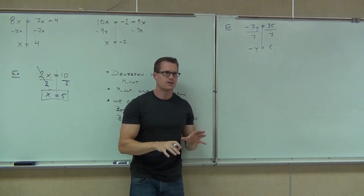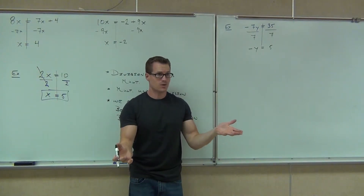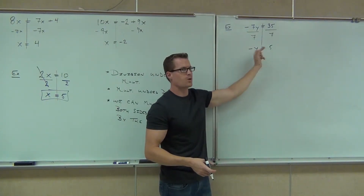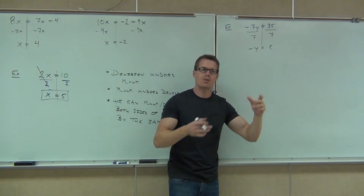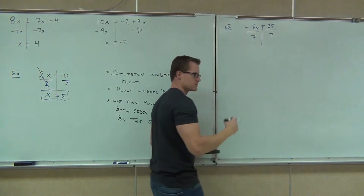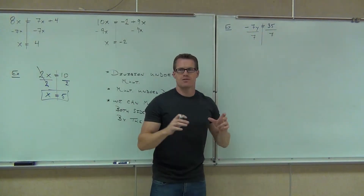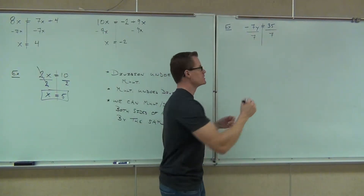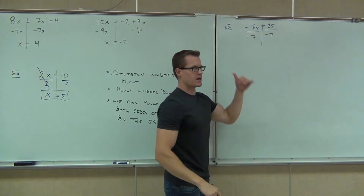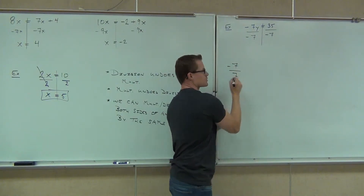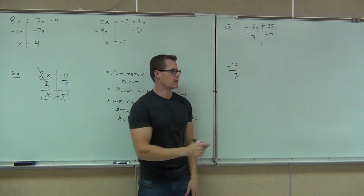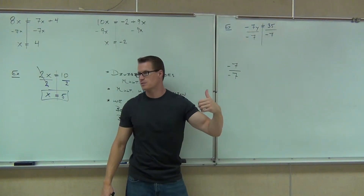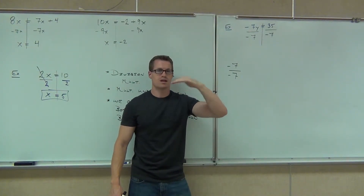Do you want negative y? No — you want positive y. If ever you get down to negative y equals 5, y equals negative 5. You would divide by a negative. To make it easier, what we're going to do is divide by the exact same number that you have in front of your y. The negative has to be included. Negative divided by negative is a positive. That's why we divide by exactly the same number — whatever you have in front of your variable, you divide by exactly that, including the sign.